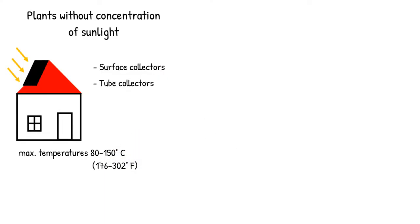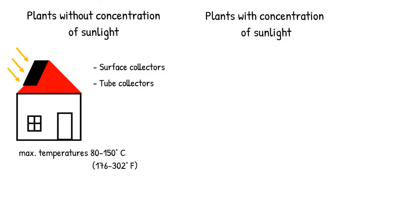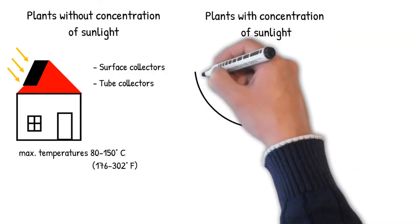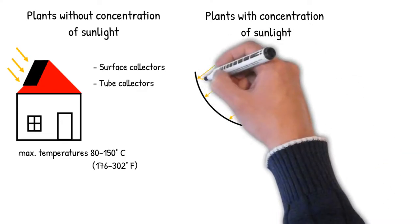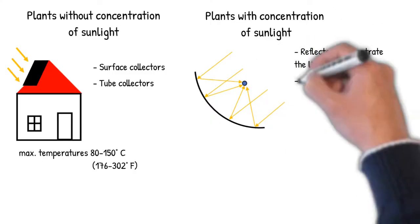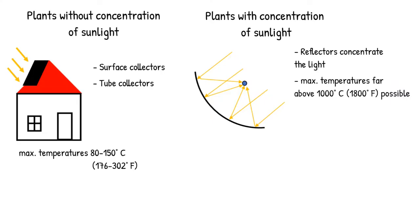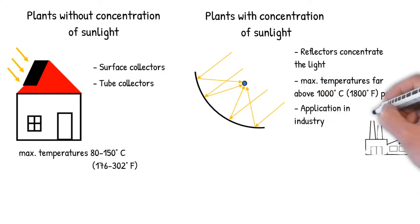The second type of system has collectors that concentrate the radiation. Here, mirrors are used to reflect the light from a larger surface into a point or a tube, where it can reach significantly higher temperatures, even over 1000 degrees Celsius if necessary. Such systems can be used in industry, for example, to generate process heat.